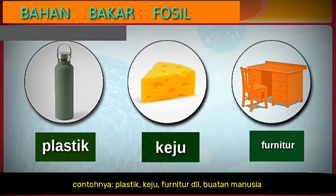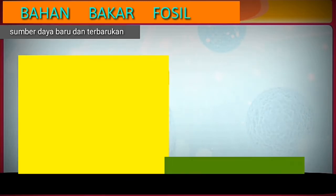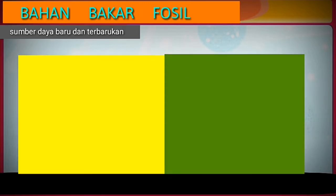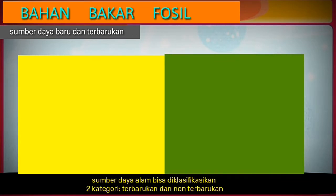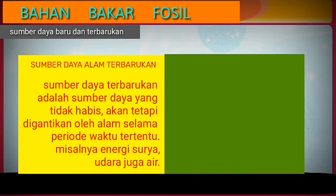Natural resources can be classified into two categories: renewable and non-renewable resources. Renewable resources are those resources which do not get exhausted. These resources are replaced by nature over a specific period of time. For example, solar energy, air, and water.